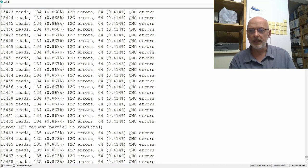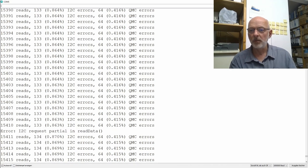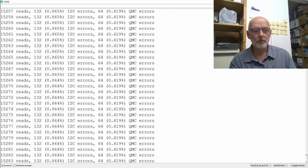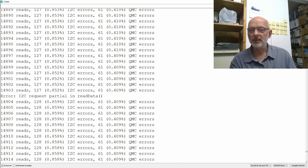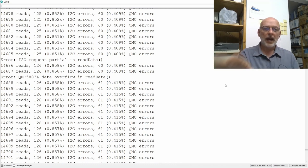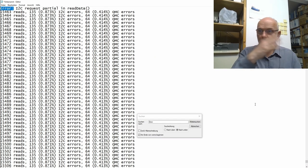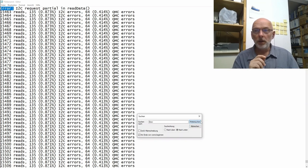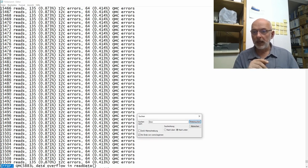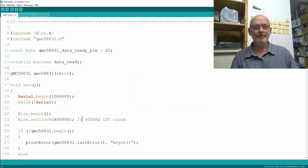There was another error, data overflow again. I2C request partial. I didn't get all the bytes I wanted. Request partial. I put that in an editor and searched for the errors. I searched through the whole file. We have only these two types of error: either I2C request partial or QMC data overflow.